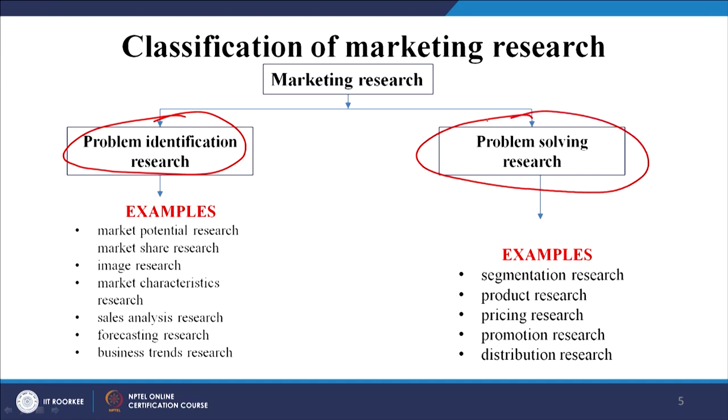Sometimes marketers need to identify the problem — what is the problem that the company is going through? For example, a study on market potential: suppose a company has started with a new product. Take the Colgate case — had Colgate thought about whether there is a potential market for frozen dinners, then maybe they would have been more clear whether this product should have been introduced or not.